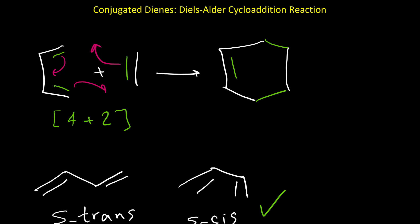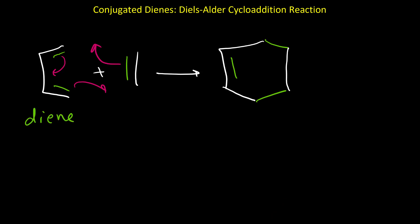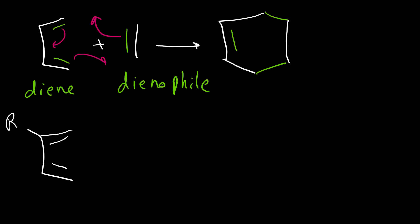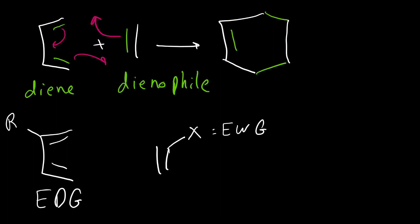Let's see what type of diene and what type of alkene is more suitable for this reaction. In Diels-Alder reaction, instead of alkene we call it the dienophile. A diene with electron-donating groups is more reactive, and a dienophile with electron-withdrawing groups is more reactive. So it is better for the diene to have more electron density and the dienophile to have lower electron density.